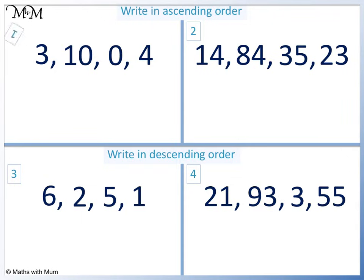Question 1. We have 0, 3, 4 and 10. Question 2. We have 14, 23, 35, 84.